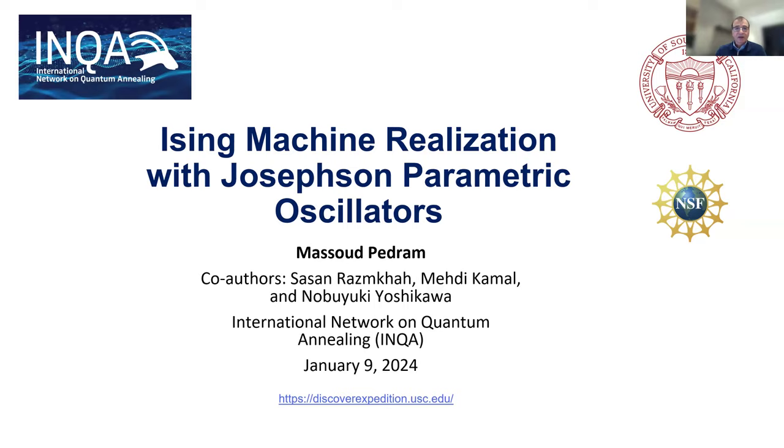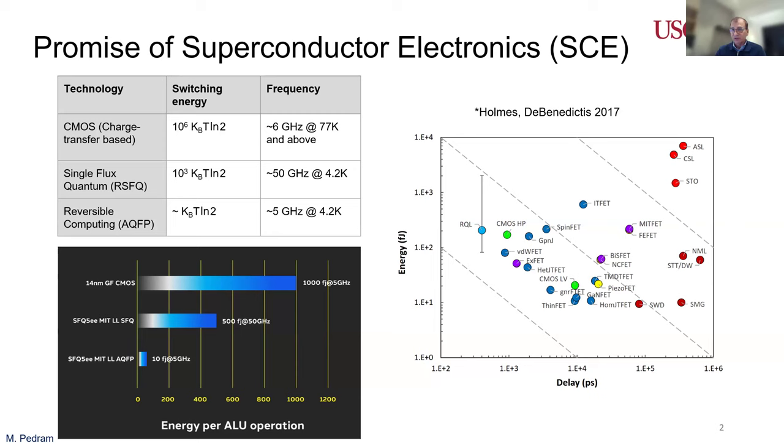My group has been working on superconductor electronics for a number of years now. The reason for focusing on this post-CMOS computing fabric is because of its extreme energy efficiency promise and the high performance that it has. In spite of the overhead of paying for cooling costs to cryogenic temperatures, this technology can deliver at least 10x, but perhaps more like 100x energy efficiency gain over state-of-the-art CMOS design. It could also have very high performance, 50 gigahertz and above, easily.